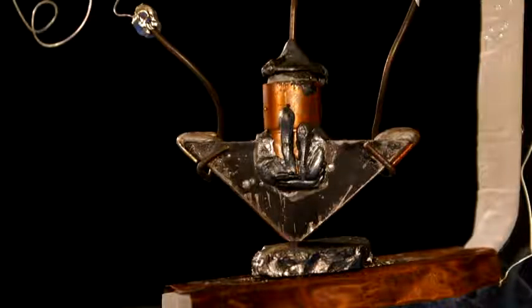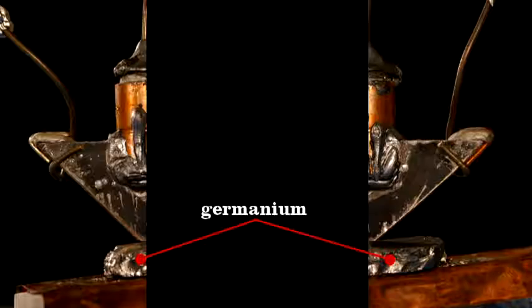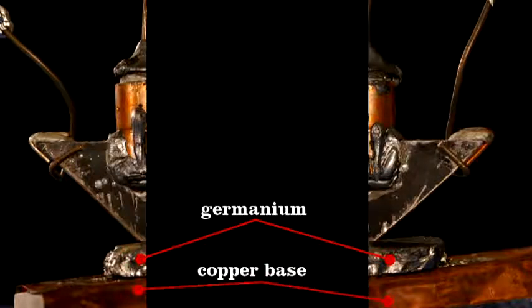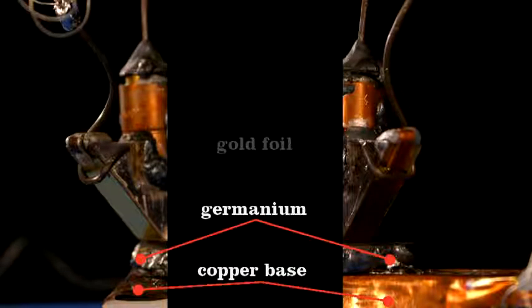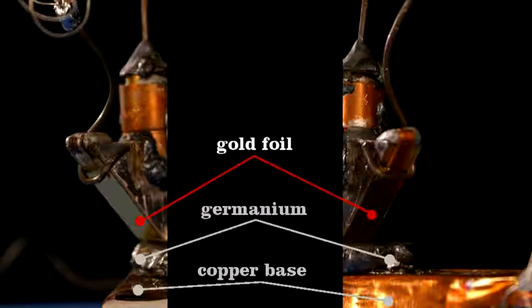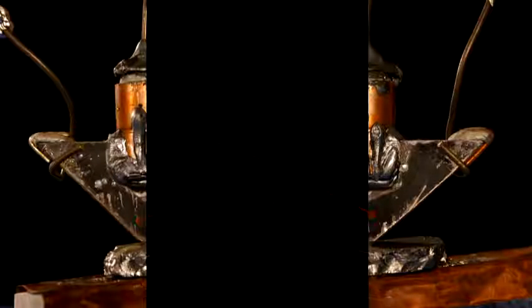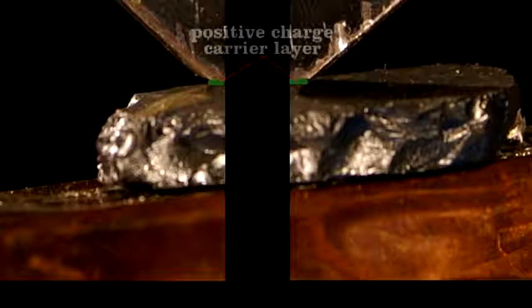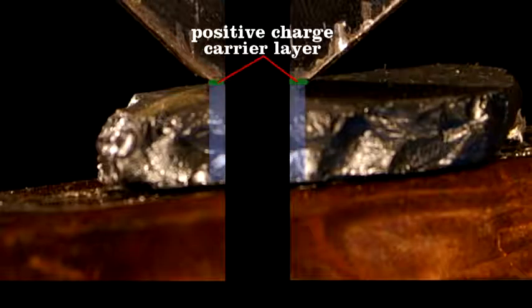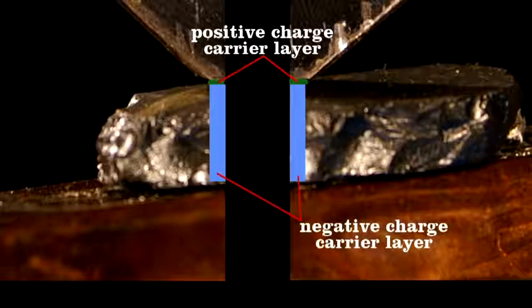It's best to first think of their device as two separate one-way current valves. At the center of each is that piece of germanium, which makes electrical contact with a piece of copper at its base. And at the top, a spring presses a thin piece of gold foil into the germanium. Right where the gold touches, there's a thin layer of the positive charge carrier semiconductor. Below that, the rest of the germanium is of the negative carrier type.